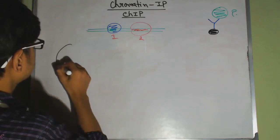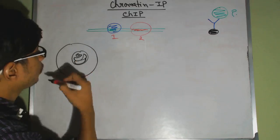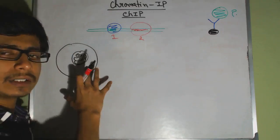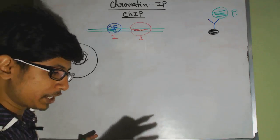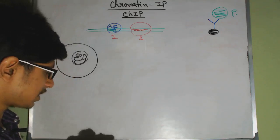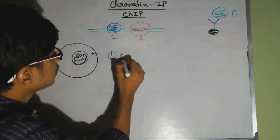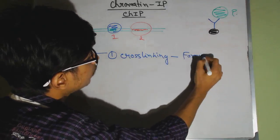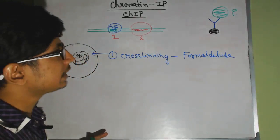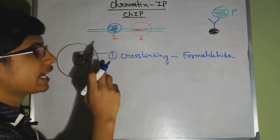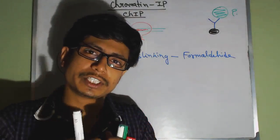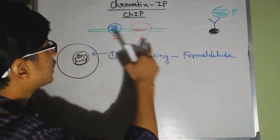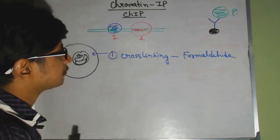The process starts with the cell and the nucleus inside the cell. We first allow whatever process we're studying — let's say DNA replication — to proceed, and when the desired time point comes, we add what is called a cross-linking agent. We add formaldehyde, which is a cross-linking agent that helps these proteins bind tightly and compactly to their region of the DNA.